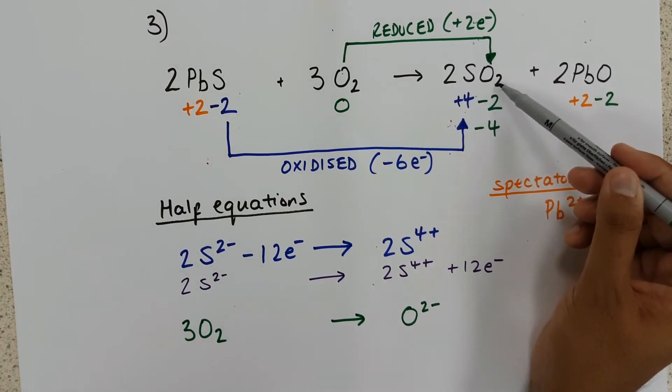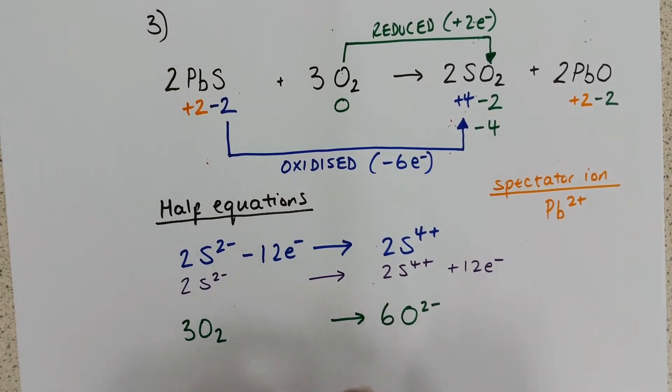Two times two gives us four, plus two more. Six O2 minus.